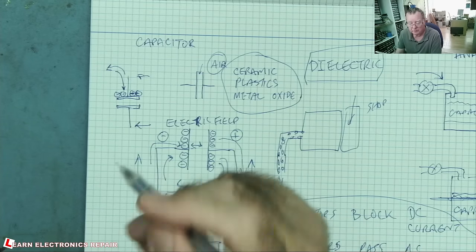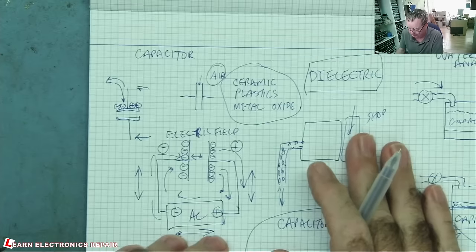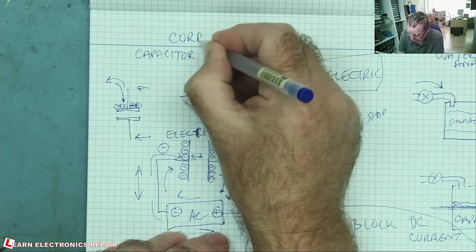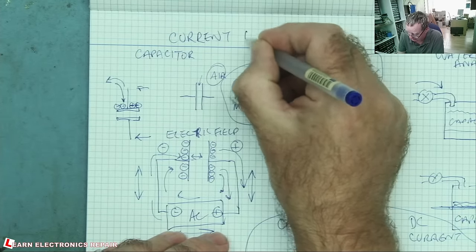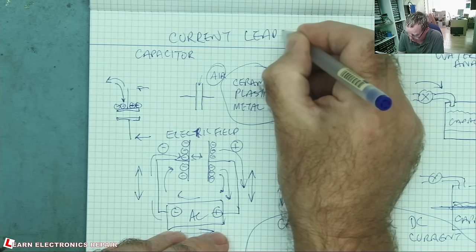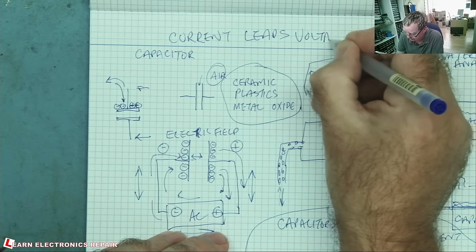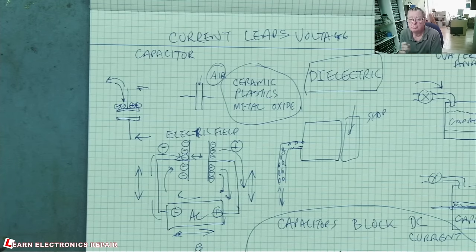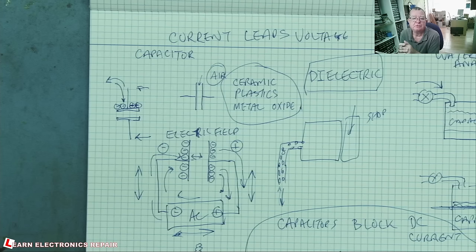And then the voltage will drop. The car park will get less and less until eventually the car park is empty. So this is a very important thing with a capacitor: current leads voltage. The current comes first and then the voltage comes afterwards.